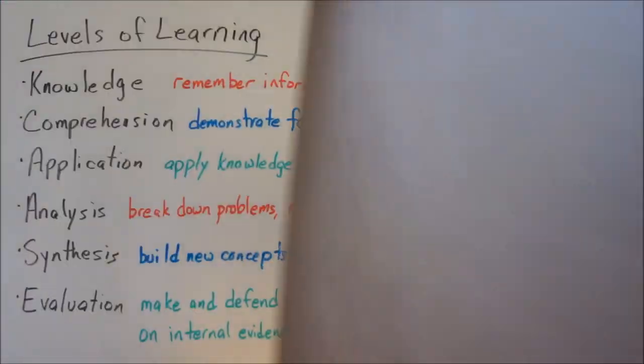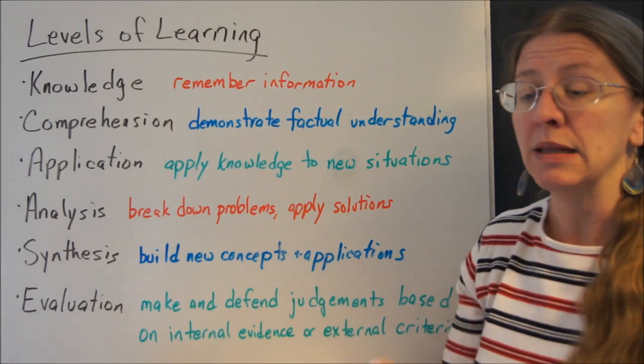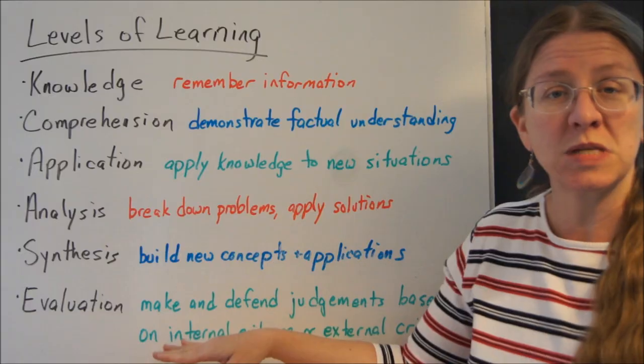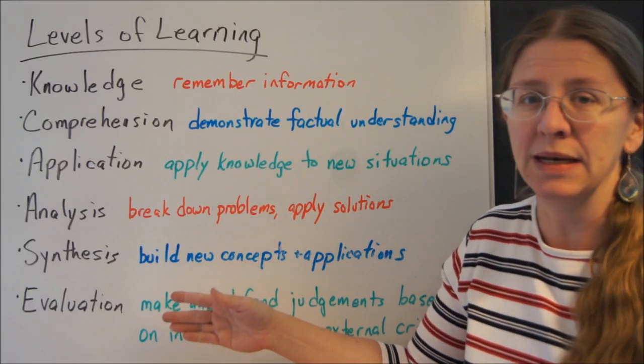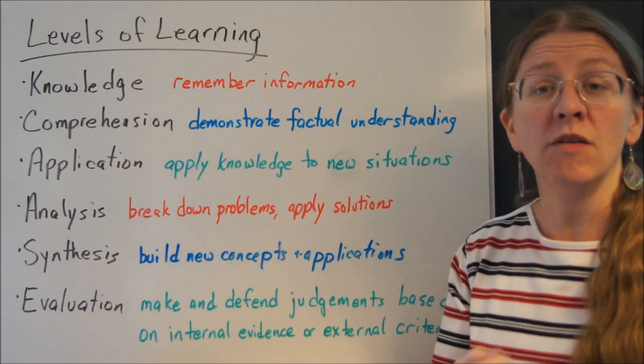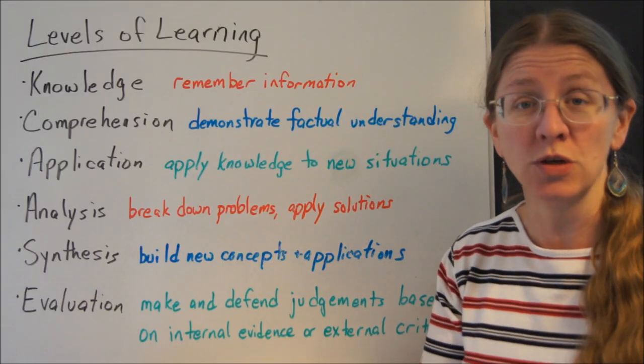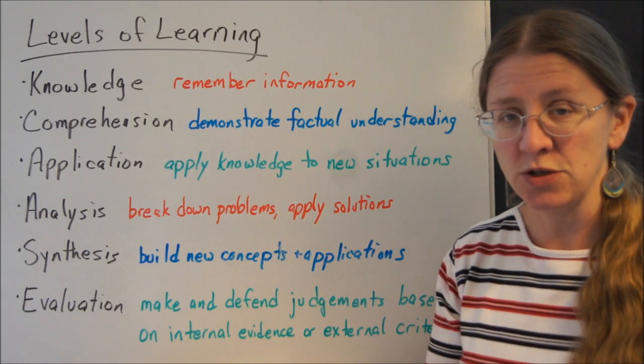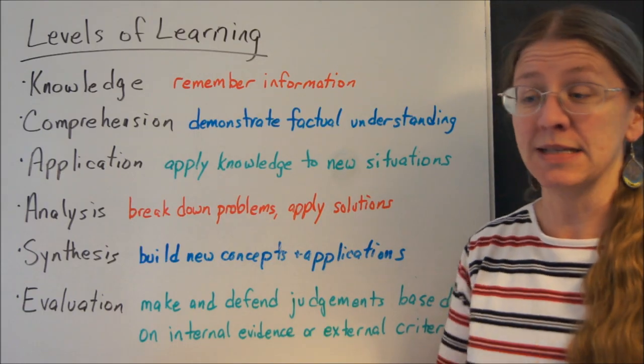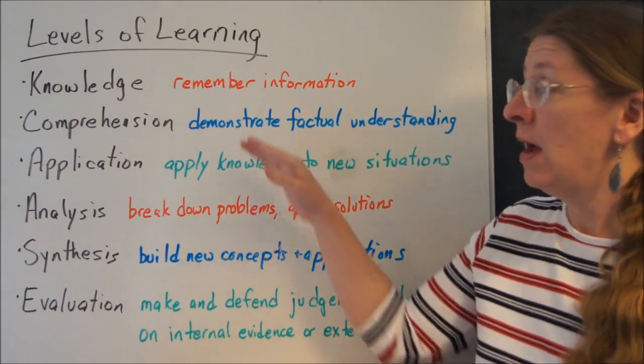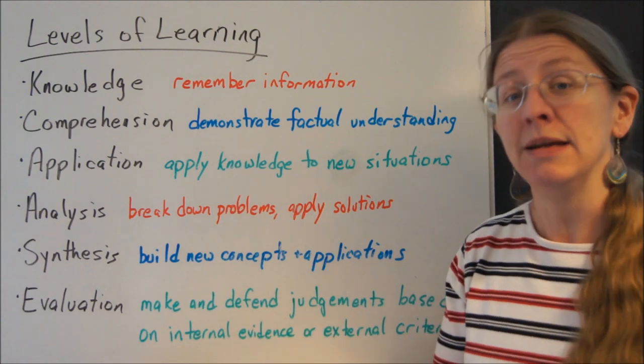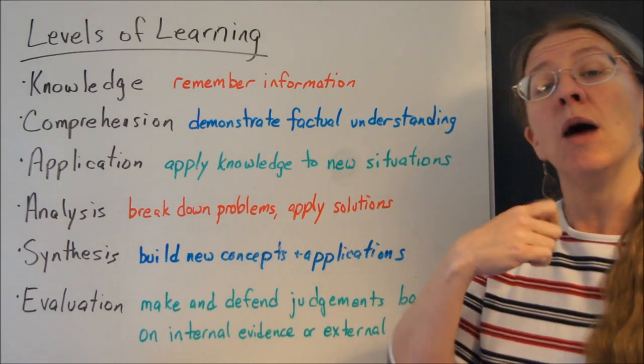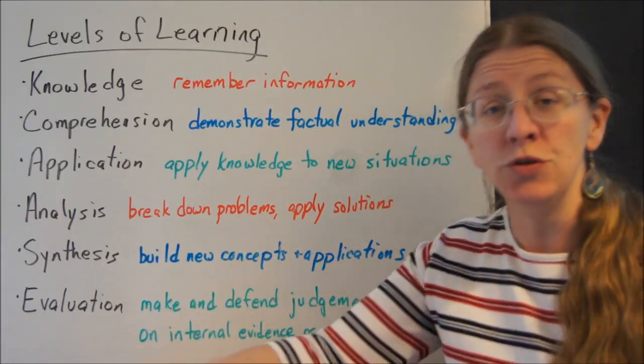Now, I want to talk for just a minute about levels of learning. This is from Bloom's Taxonomy, big into education theory. There are a lot of different ways of talking about what I mean when you learn something. If you say, what is 2 plus 2 and you say 4, that's a fact. It's something you know. Comprehending why is a little bit of a more difficult situation. And then, can you apply that knowledge to a new kind of problem?